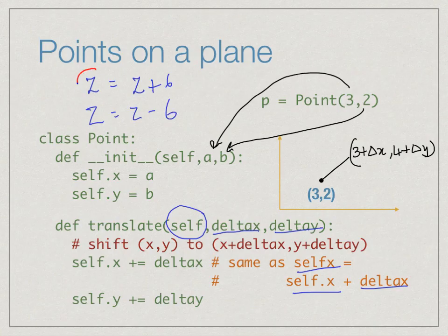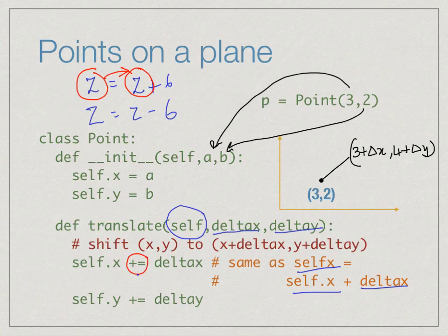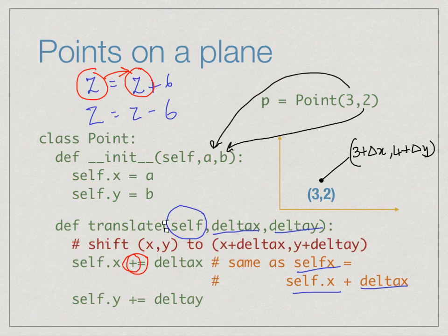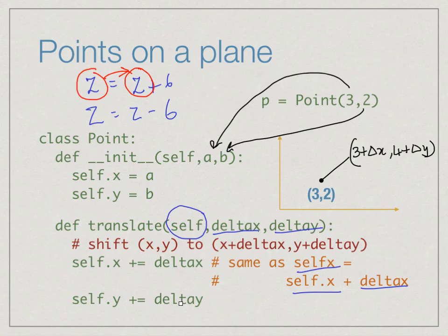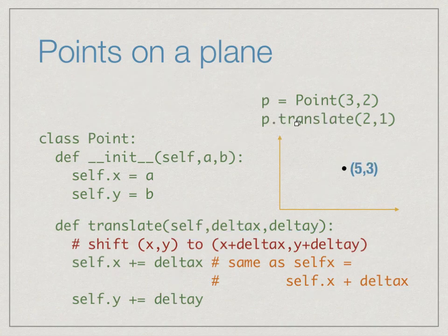Whenever the same name is being updated, there is a shortform: self dot x plus equals delta x is a shortcut for self dot x equals self dot x plus delta x. It means the name on the left is the first argument to the operation. This is a convenient shortcut that saves typing. Similarly, self dot y plus equals delta y shifts the y coordinate. So if we say p dot translate(2, 1), the point moves from (3, 2) to (5, 3).